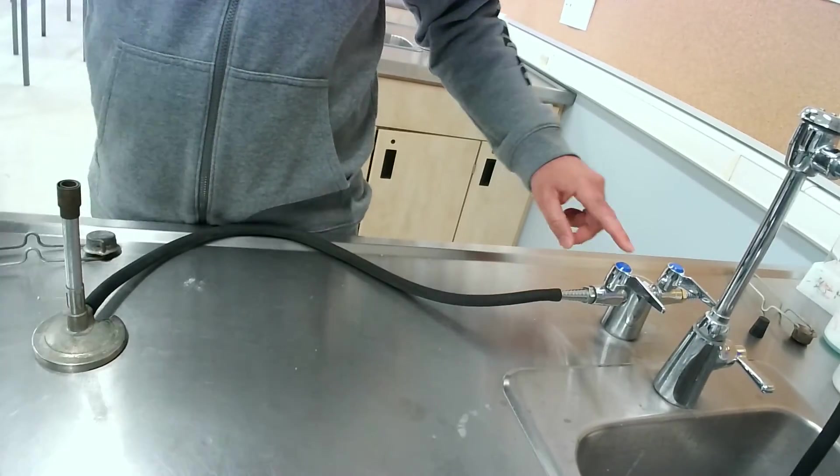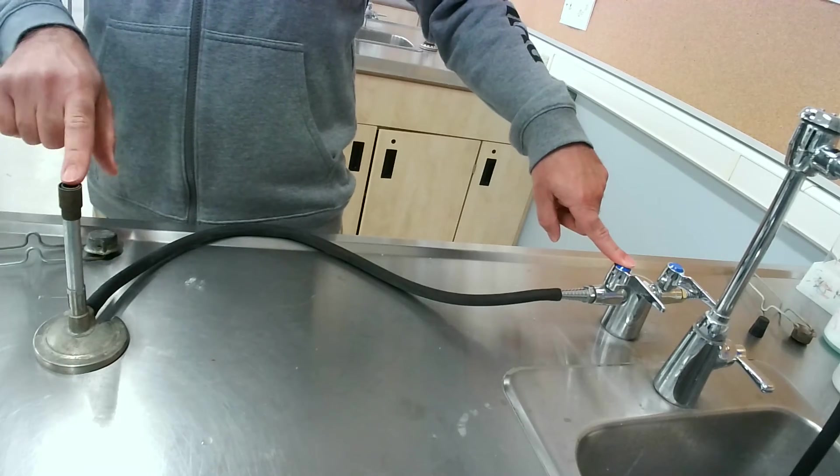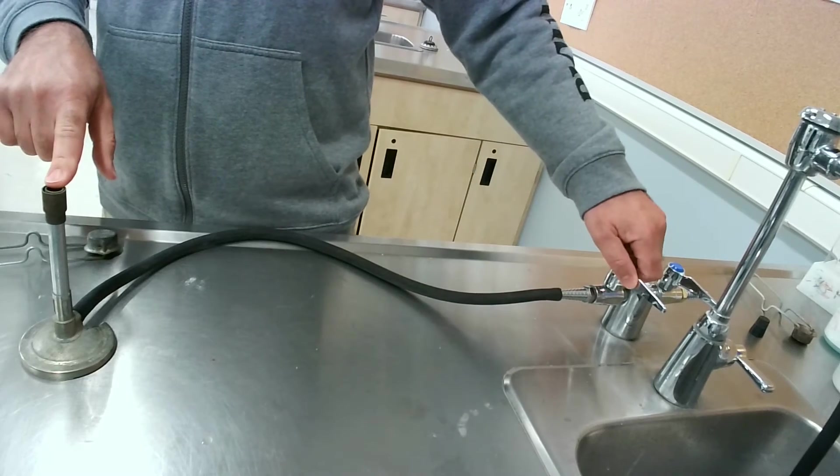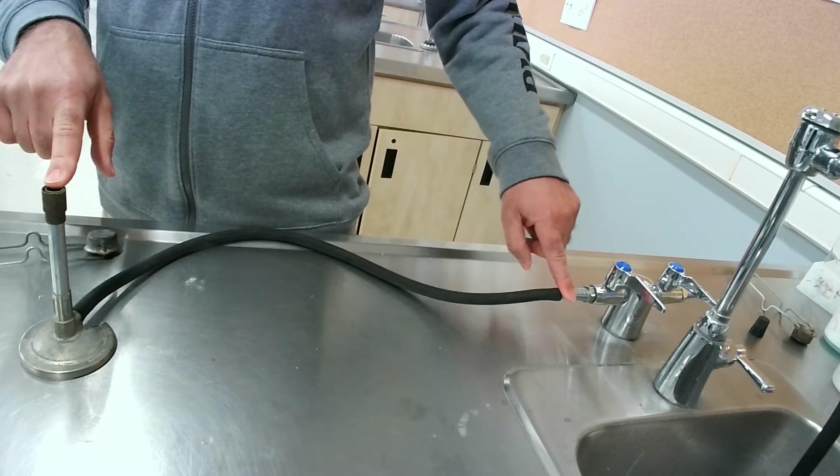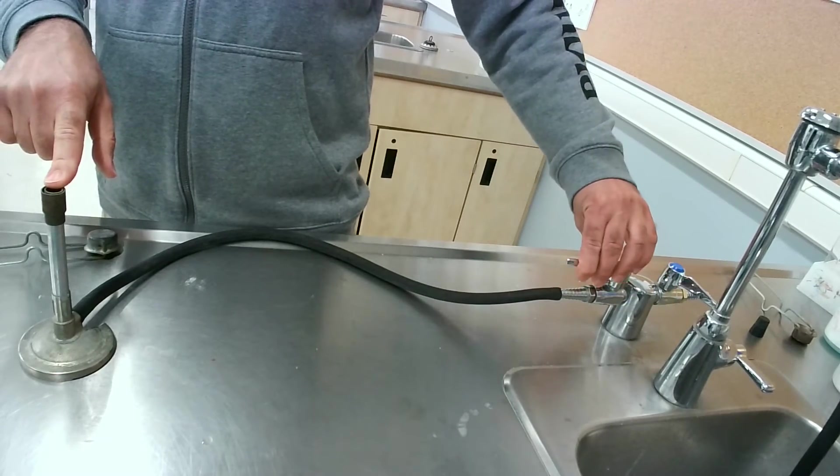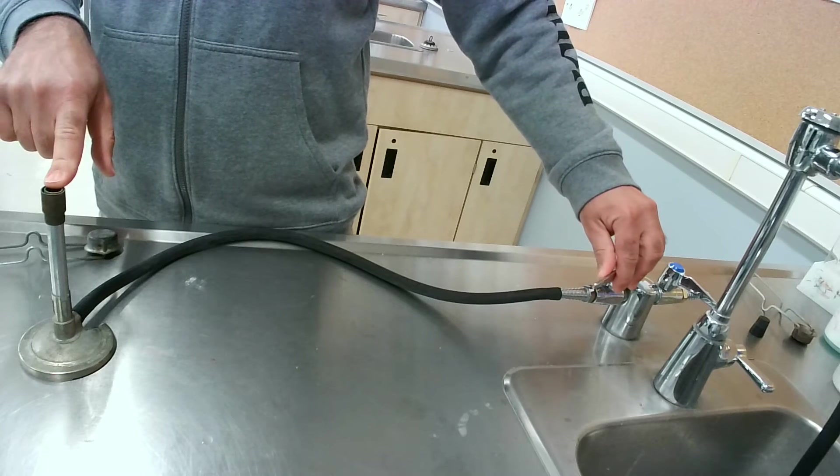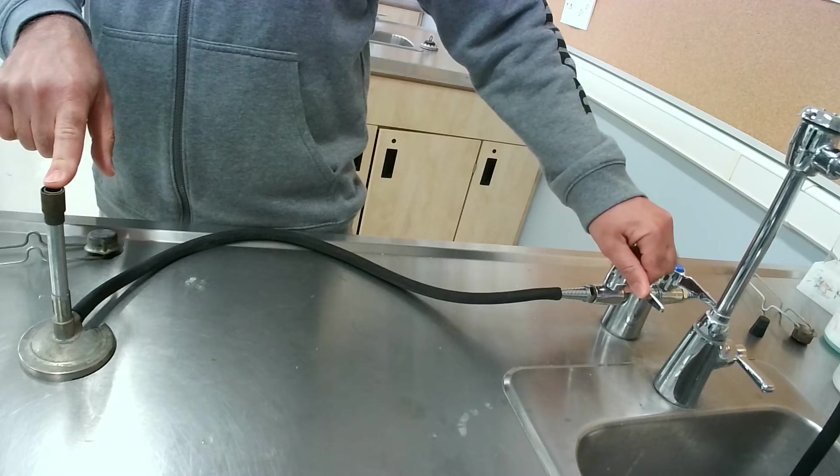Over here, we have the valve that we turn to let the gas come out. When this valve is perpendicular to the nozzle, the gas will not be coming out. When it's parallel to the nozzle, it's coming out at full. We can adjust the rate of flow by putting it somewhere in between.